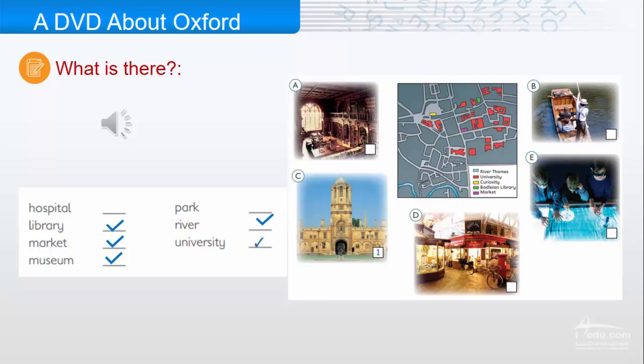So, in Oxford, there's a university, a library, a museum, a river, and a market.